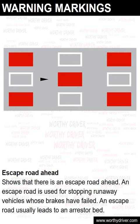Escape road ahead. This marking shows that there is an escape road ahead. An escape road is used for stopping runaway vehicles whose brakes have failed. An escape road usually leads to an arrestor bed.